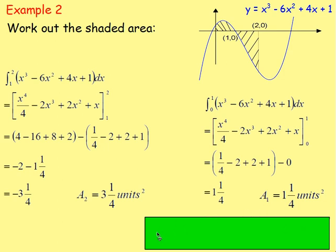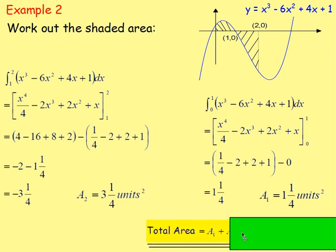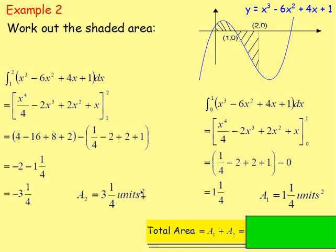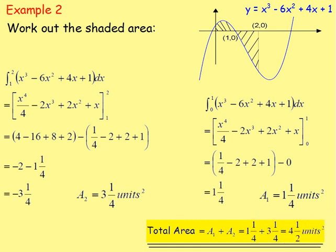Total area — add them together. So the total area is area 1 plus area 2. We've got the 1 and a quarter, add 3 and a quarter, which gives us 4 and a half squared units.